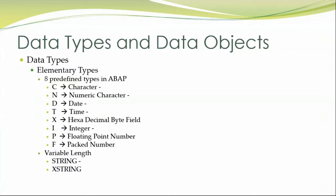What is a data type? A data type is denoting what type of data that you are going to program with. In this we have two categories: the predefined data types and the variable length data type. These two come under the elementary types. If you speak about predefined data types in ABAP, we have eight predefined data types.